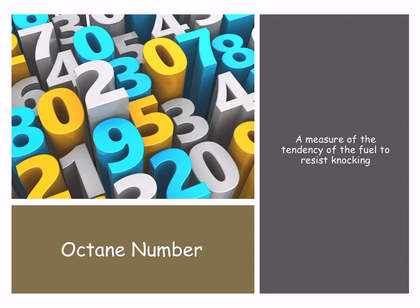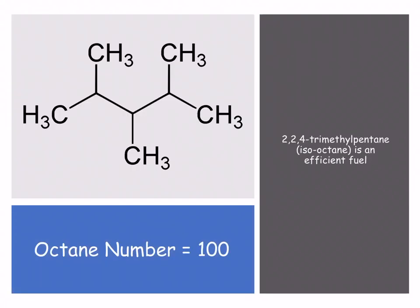This brings us to the terminology of octane number. The octane number of a fuel is the measure of its tendency to resist knocking. The octane number goes from zero — which is heptane, very inefficient — to 100, which is assigned to 2,2,4-trimethylpentane.